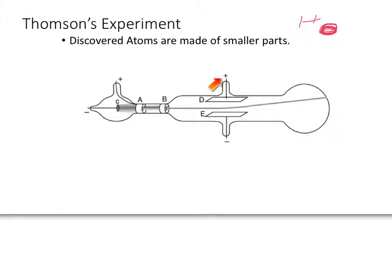When he put a positive charge up here and a negative charge down here, what he found is the beam actually bent towards the positive. Well, what does that mean for the beam? Well, that means that the beam must have been, of course, negative in charge. That's why it bent up towards the positive. So he discovered these negative charges.